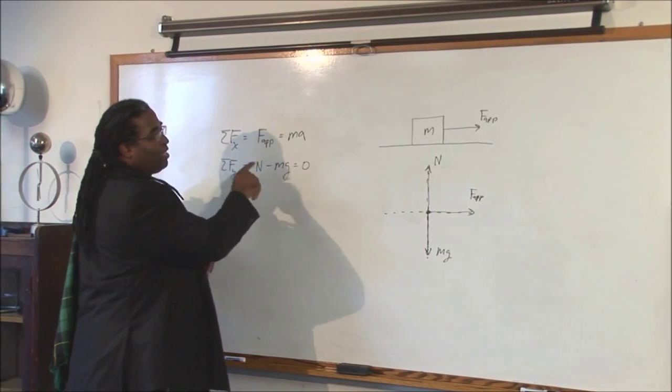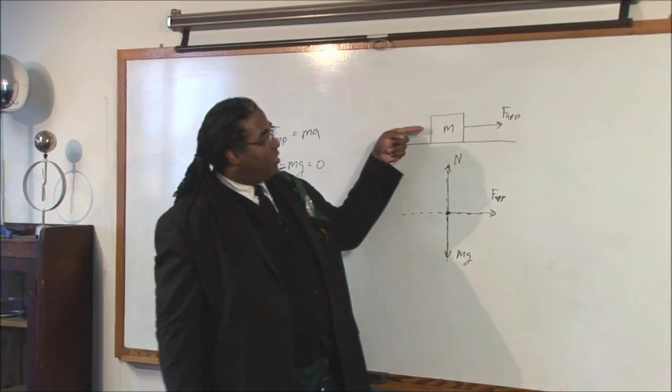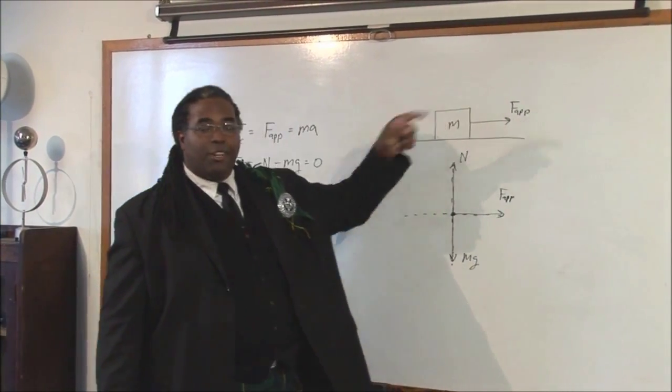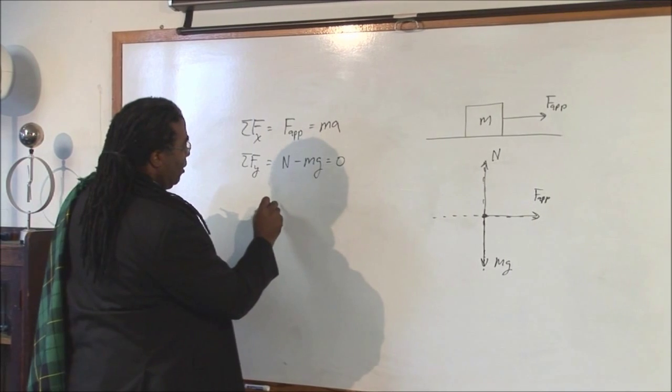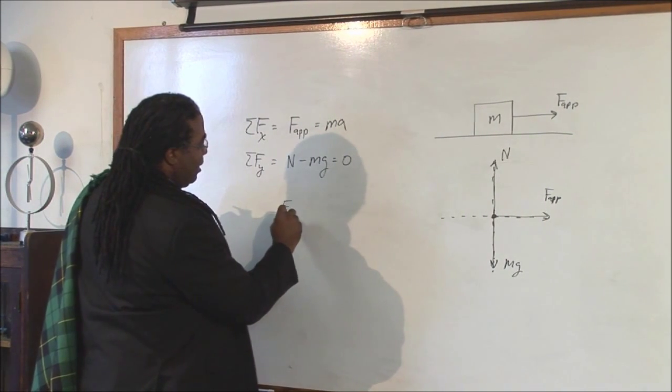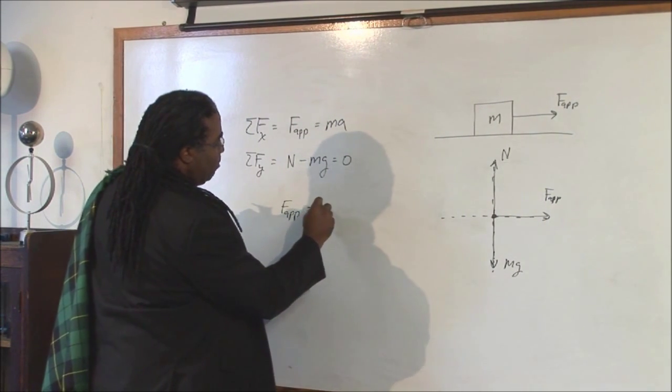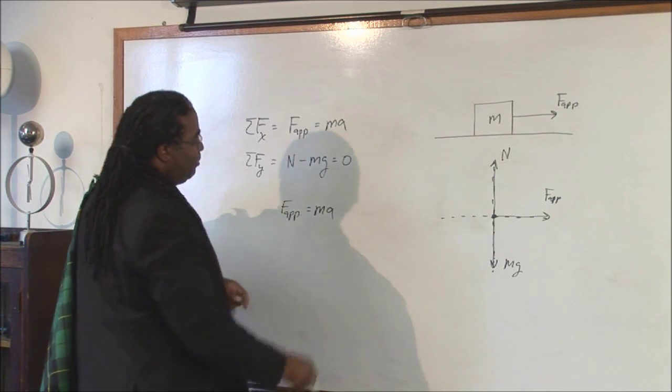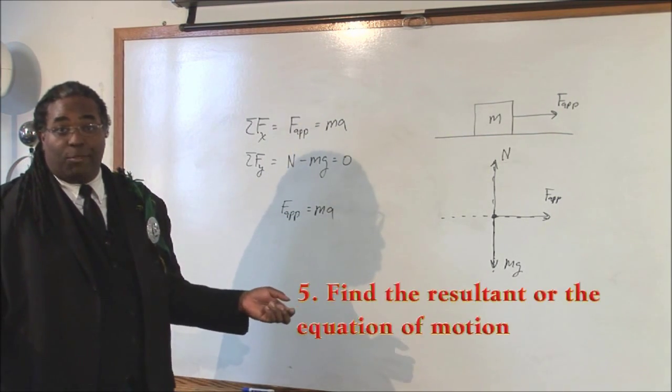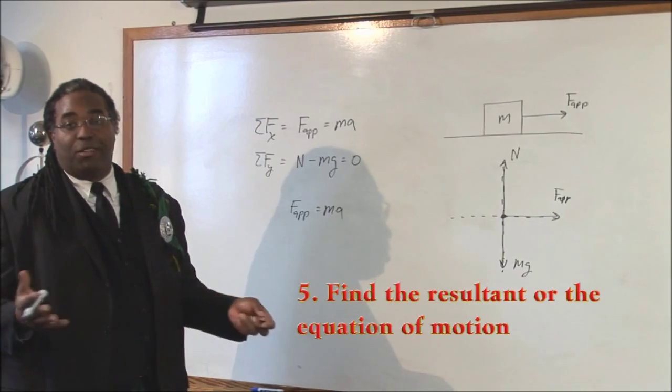So, now, if we need to know the motion of the system, we know it's going to be moving to the right. So, we solve for the x component. F applied equals ma. Find the resultant, or the equation of motion, which is step five.